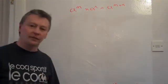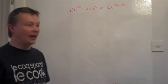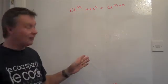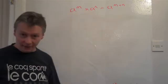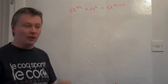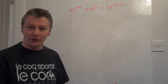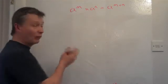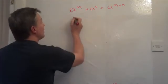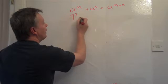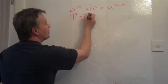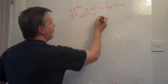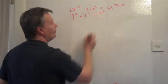Now you look at that and think that's a little bit boring. What it means is a is any number and m is any power. I'm going to give you a practical example to clarify things. So what it really means is 7 to the power of 3 multiplied by 7 to the power of 2 equals 7 to the power of 5.